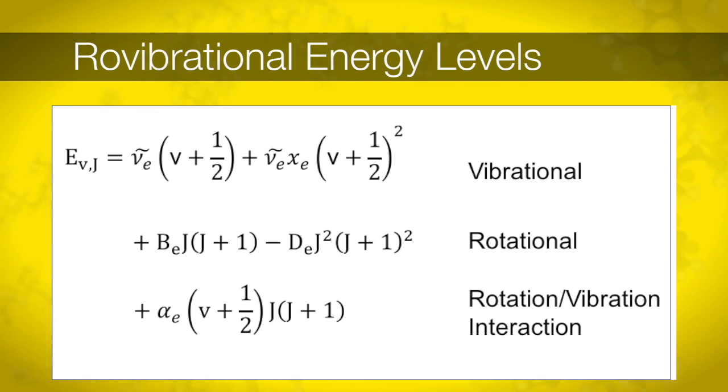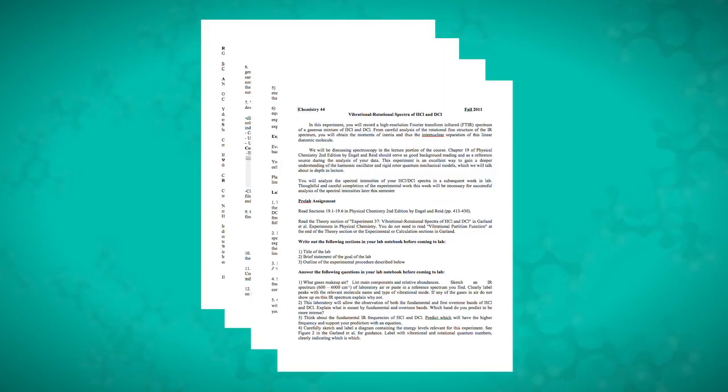In this experiment, you will record the transition frequencies observed in HCl and DCl. These are related to the energy levels that we have formulated here. After you assign the quantum numbers V and J to your transitions, you will use a linear regression to solve for the constants underlined here in red. More detailed information for this experiment can be found in the lab handout.